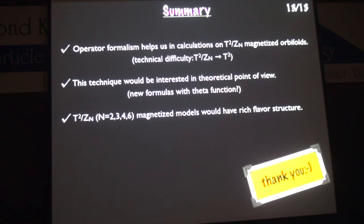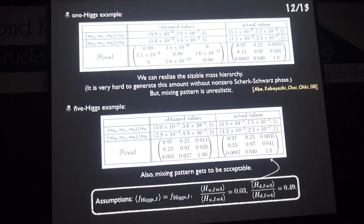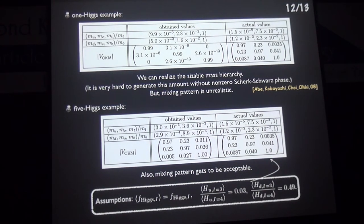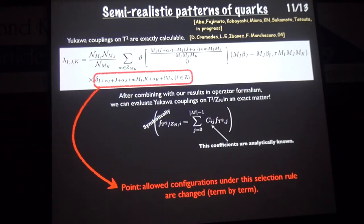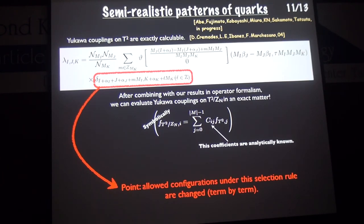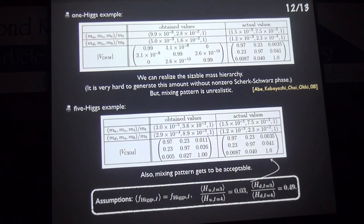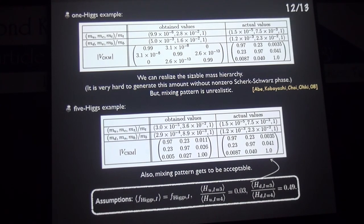Q: About the CP phase of your CKM matrix — is it just a coefficient or can you spontaneously generate it? A: In some sense spontaneously, because the theta function is a complex function, so there is an origin of the CP phase. The degree of the complex angle differs generation by generation. In this analysis we have not yet analyzed the CP phase fully, but the origin of the CP phase is present in this model, and at some suitable parameter point we can find a suitable magnitude of the CP phase.